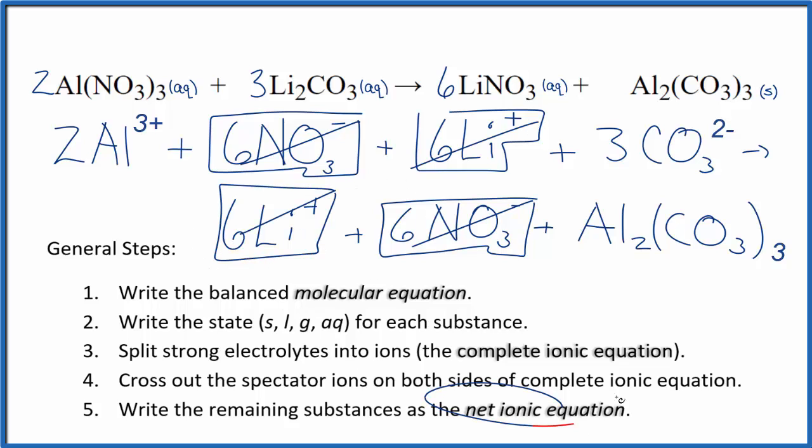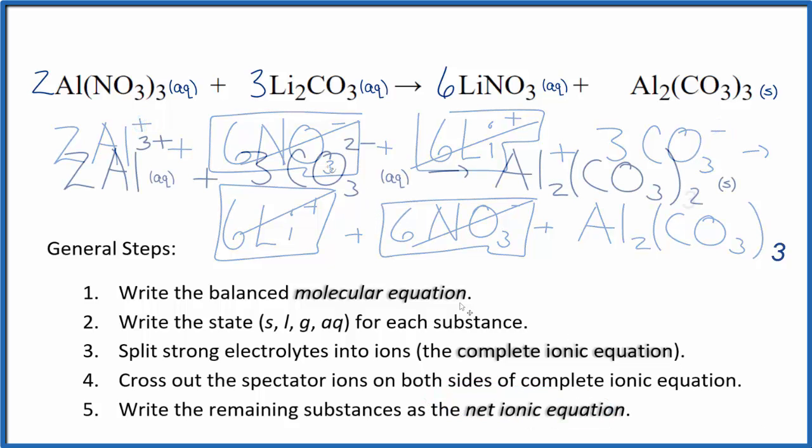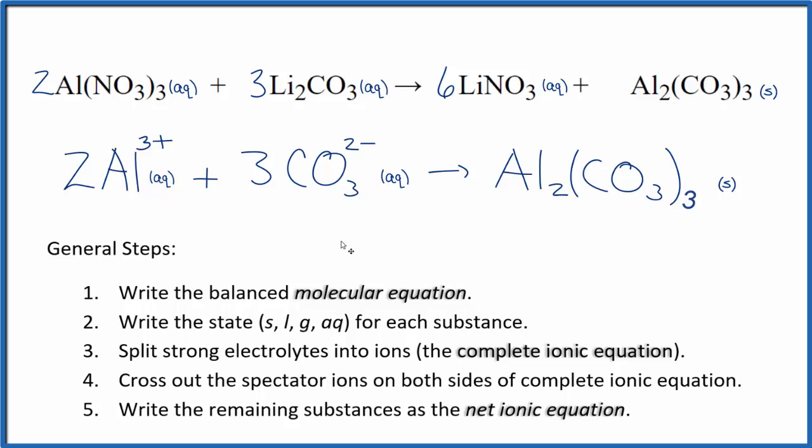And what's left, that's the net ionic equation for Al(NO3)3 plus Li2CO3. I'll clean this up and write the states. We'll have our net ionic equation. So this is the balanced net ionic equation for aluminum nitrate plus lithium carbonate.